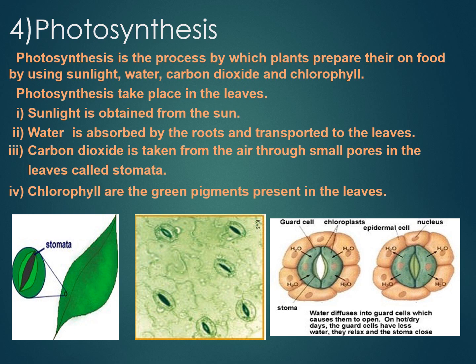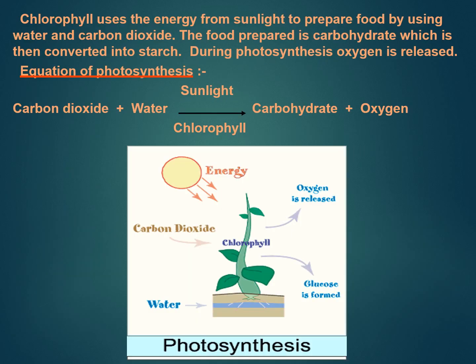The last and very important one is sunlight. Sunlight is essential for photosynthesis. Even if green leaves get carbon dioxide and water, they cannot prepare food without sunlight. Hence, the sun is the ultimate source of energy for all living organisms.